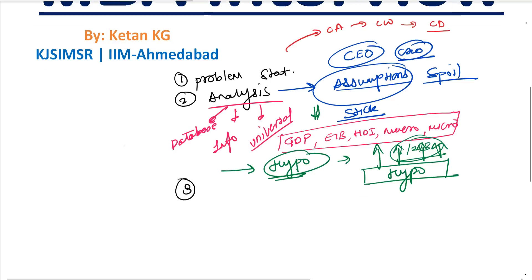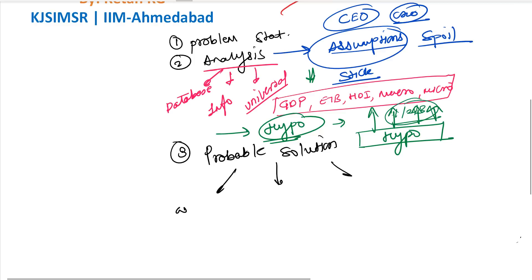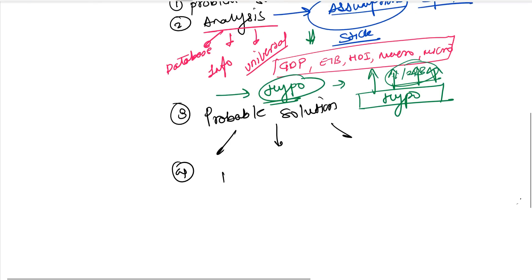Number three, after your problem statement and analysis, is the probable solution. Here you talk about all the probable solutions you see — maybe multiple solutions: number one, number two, number three. Then number four comes in, which talks about your risk management. As a manager or management aspirant, it is always good to have probable solutions.